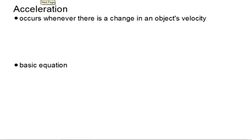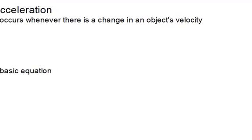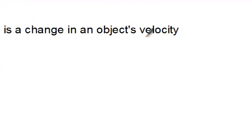Today we're going to be discussing constant acceleration. Acceleration occurs whenever there is a change in an object's velocity. Velocity is basically speed plus a direction.